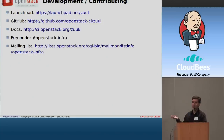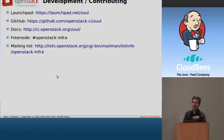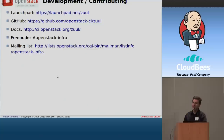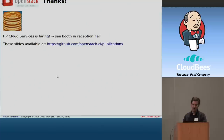Everything I've said applies not just to Zuul but to everything else we're doing. So if you're managing infrastructure with Puppet, or dealing with Gerrit or even Jenkins alone, you might be interested in some of the work that we're doing. Everything that we do is public and checked into Git on GitHub — the configuration of all of our machines, everything except the passwords and email addresses. So hop onto IRC on Freenode in the OpenStack Infra channel, or the mailing list, and chat with us. HP Cloud Services is also hiring — visit the booth in the reception hall if you want to find out more. These slides are available on GitHub in the publications repository of the OpenStack CI org.